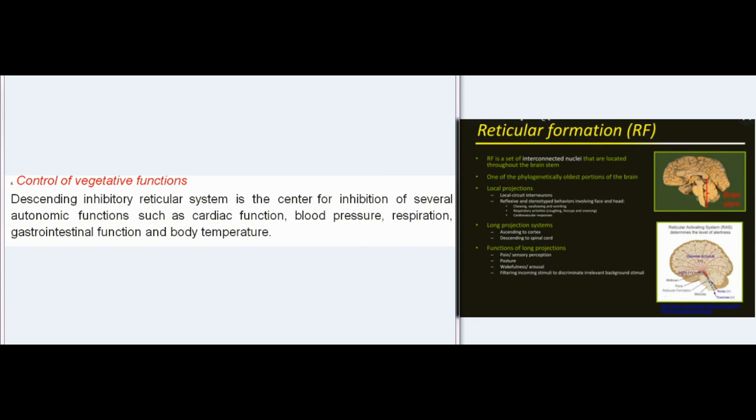Control of vegetative functions: the descending inhibitory reticular system is the center for inhibition of several autonomic functions such as cardiac function, blood pressure, respiration, gastrointestinal function, and body temperature.